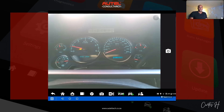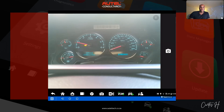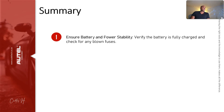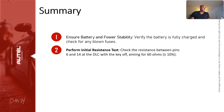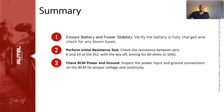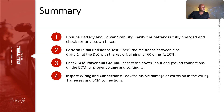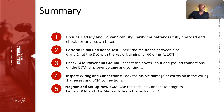We went from diagnosing all the way to programming and coding. Things to remember when diagnosing this error code: ensure the battery and power supply are stable and verify there are no blown fuses. Perform an initial resistance test — check resistance between pins 6 and 14 at the DLC with the key off, aiming for about 60 ohms. Check BCM power and ground connections for proper voltage and continuity. Inspect wiring and connections for visible damage or corrosion. Finally, program the new BCM using the TechLine Connect software and use the Maxisys to learn the restraint ID.